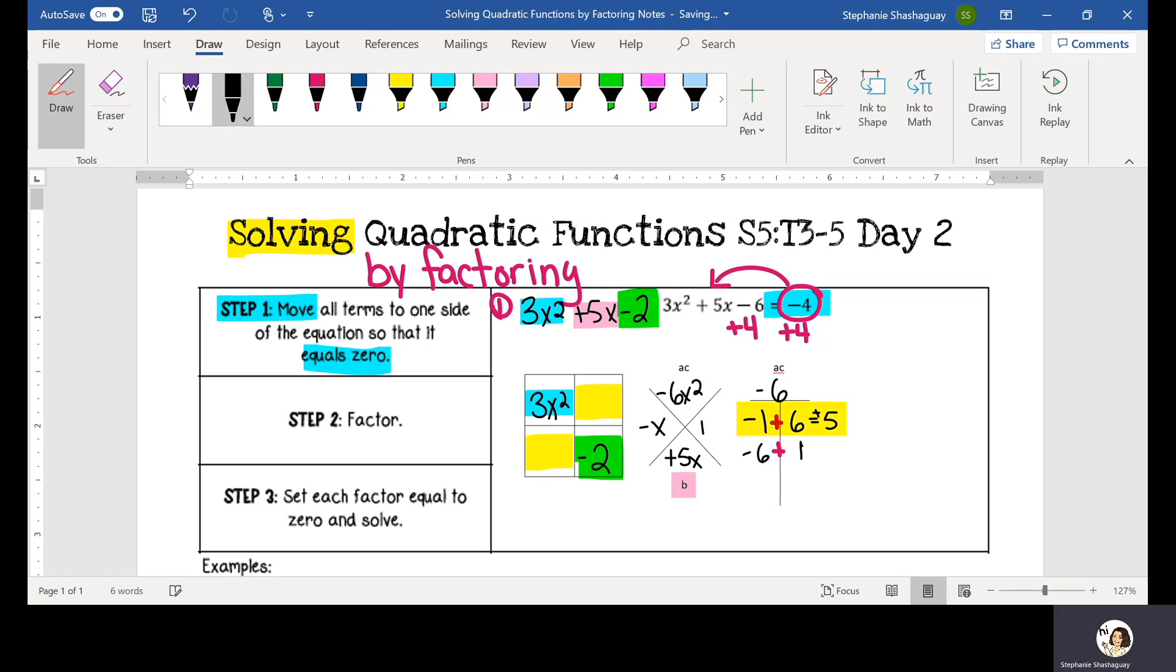So negative x and a positive six x, negative x, positive six x that I'm going to fill in in my area model to factor out. So I have three x squared minus x. I need to look for the terms that they have in common and they both have an x in common so I can factor that out.